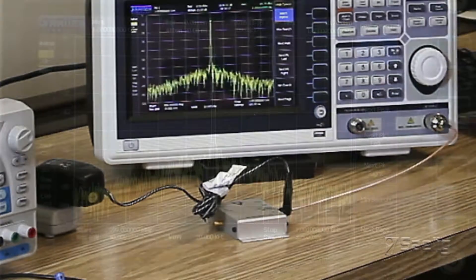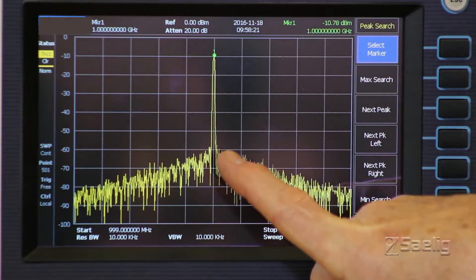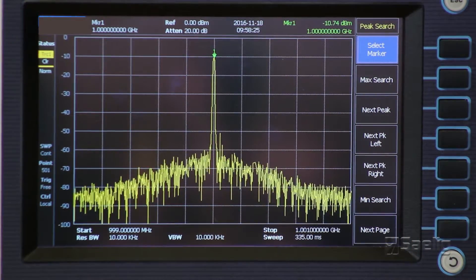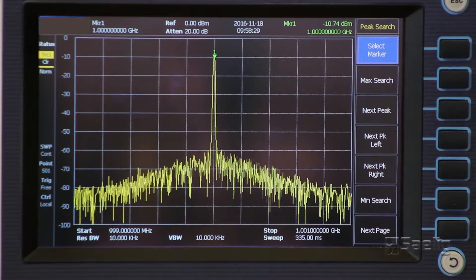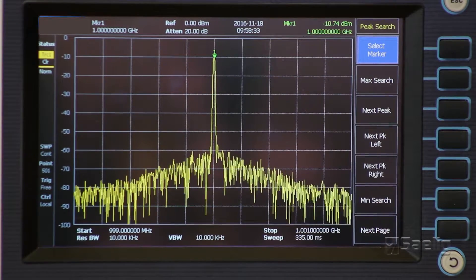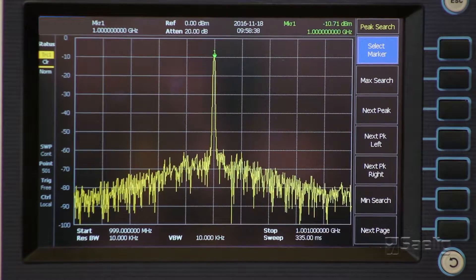So what we have here is the one gigahertz frequency coming out, and the level is about minus ten point seven four, so about minus eleven dBm. That's approximately what you're supposed to get out of this device with the factory default settings.